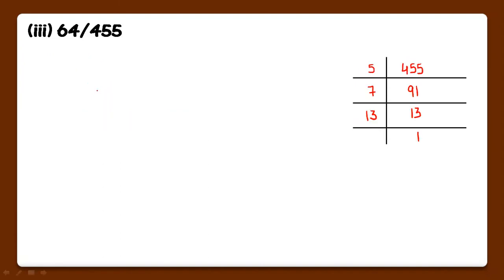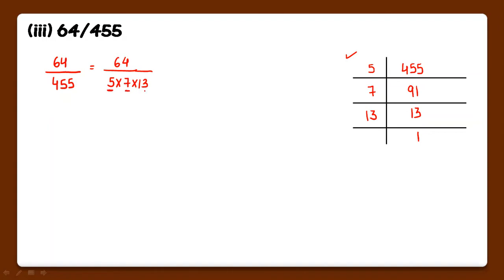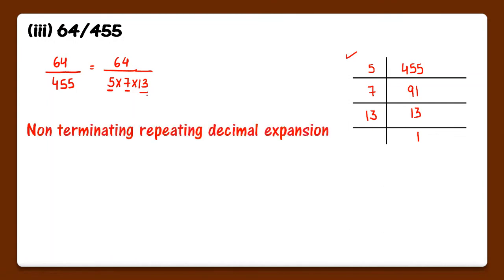Now next part: 64 upon 455. Both are co-prime numbers. Now we will do the prime factorization of 455. We can write 455 as 5 into 7 into 13. Yahan par 5 aa raha hai lekin 5 ke saath other numbers bhi aa rahe hain — that is 7 and 13. So it is non-terminating repeating.